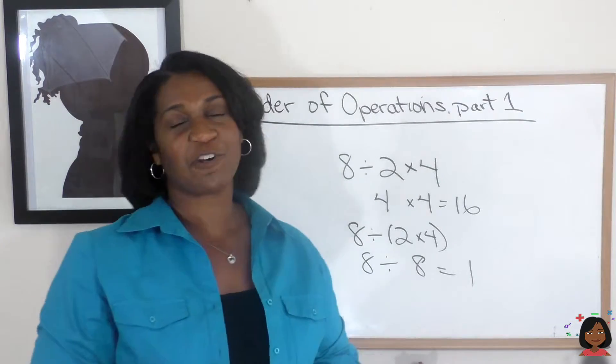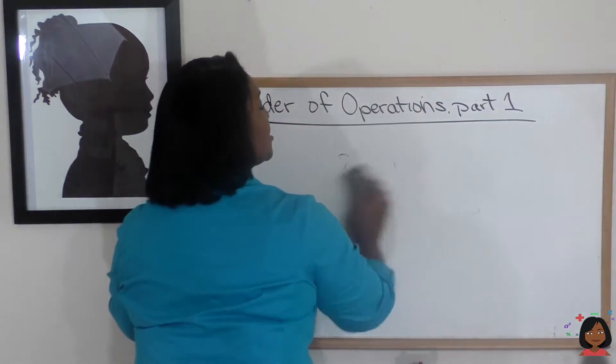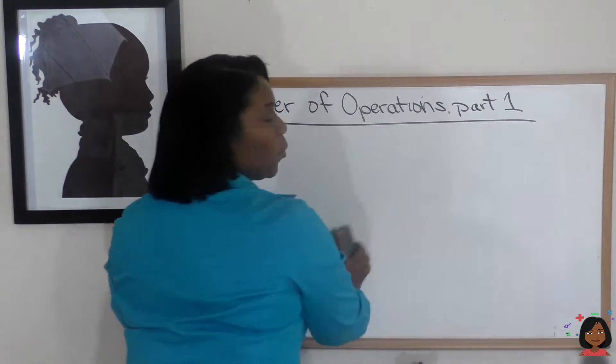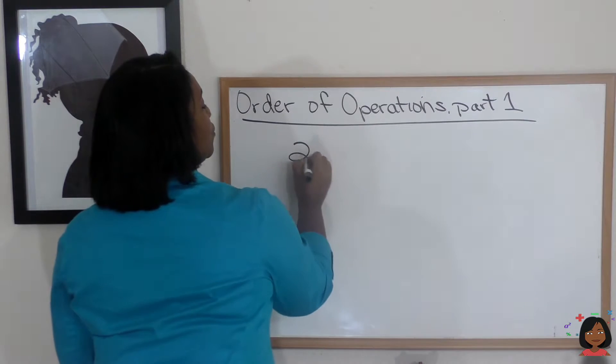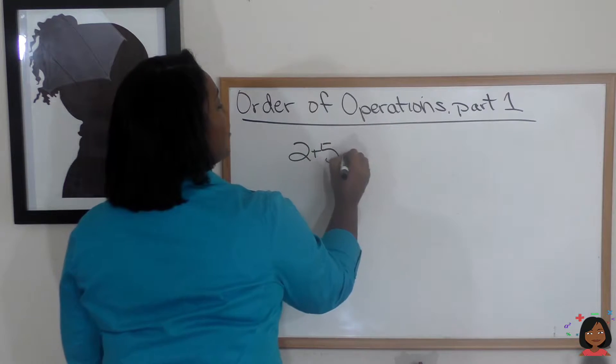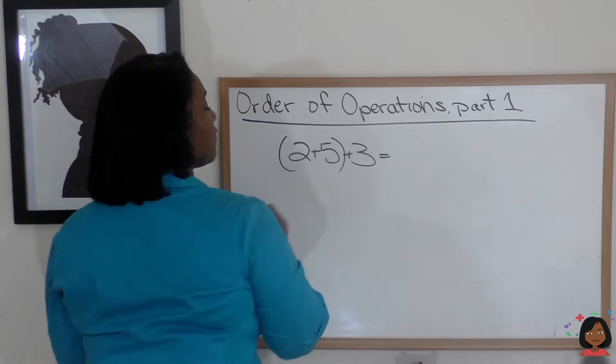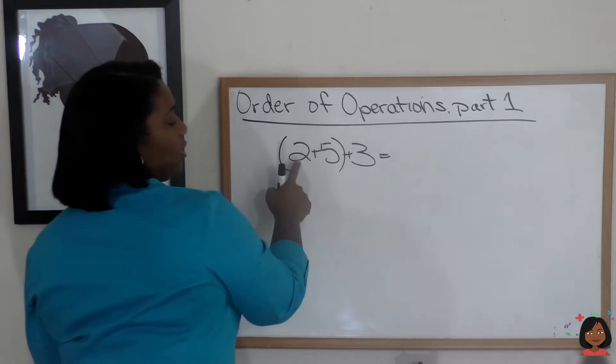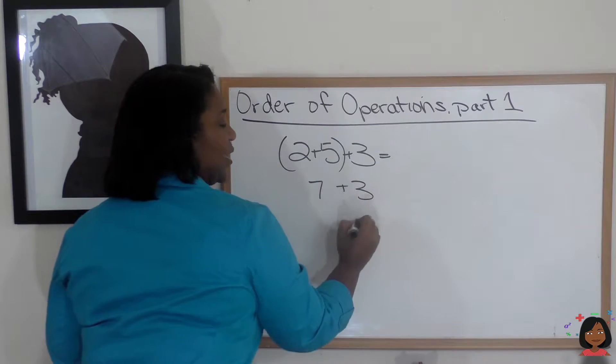I want to show you one more thing regarding the order of operations. Let's say we're dealing specifically with just addition. So I'm going to add the numbers 2 plus 5 plus 3. Now I'm going to add some parentheses around the 2 and the 5. That would give me 2 plus 5 is 7 plus 3. It gives me 10.